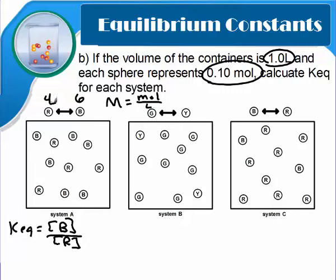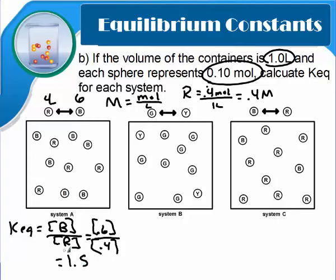So I have 4 R's and they're 0.1. So for R, it should be 4 or 0.4 over 1 liter, which is a molarity of 0.4 molarity. So for my B, I have 0.6 molarity over 0.4 molarity, giving me a Keq of 1.5. No units on Keq.